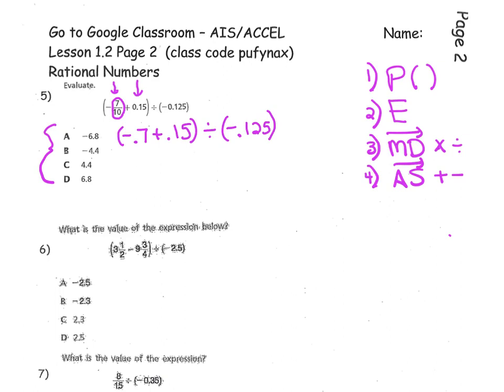Now we have converted all of our values into decimal form. And according to PEMDAS, we should clean up these parentheses first. You're going to enter negative 0.7 plus 0.15. You should have gotten negative 0.55. And we're dividing that by negative 0.125.